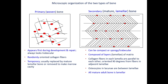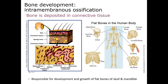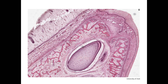Intramembranous ossification is the formation of bone in mesenchymal tissue, responsible for the development of the flat bones of the skull and the mandible. Primary bone is formed in discontinuous patches separated by connective tissue. As these patches expand, they merge, and some of these islands of connective tissue remain to become the Haversian canals of forming osteons in compact bone. Here is an H&E stained section of a developing mandible where you can see islands of bone developing amid connective tissue, and a developing tooth is also recognizable.